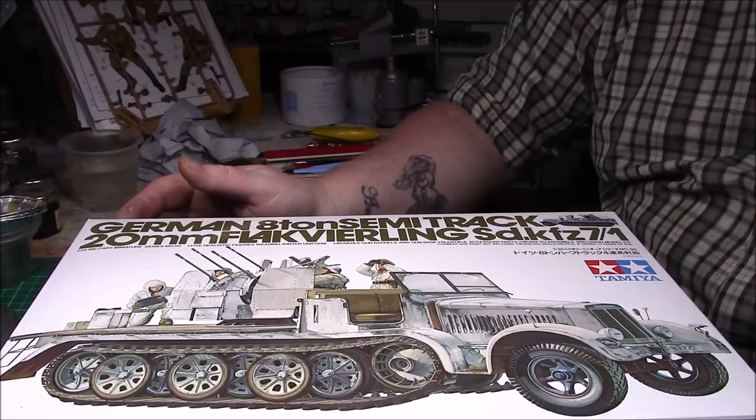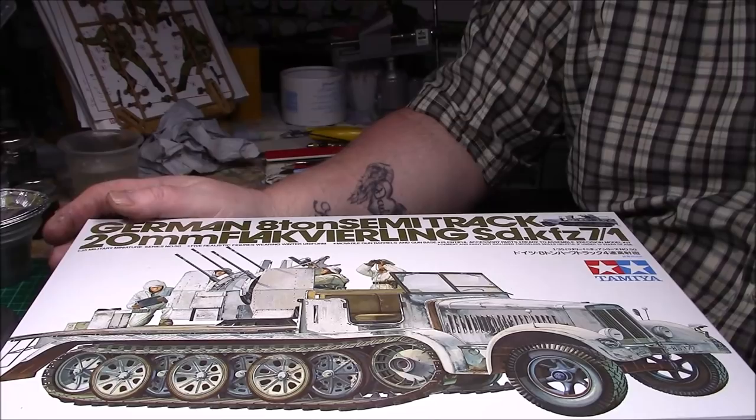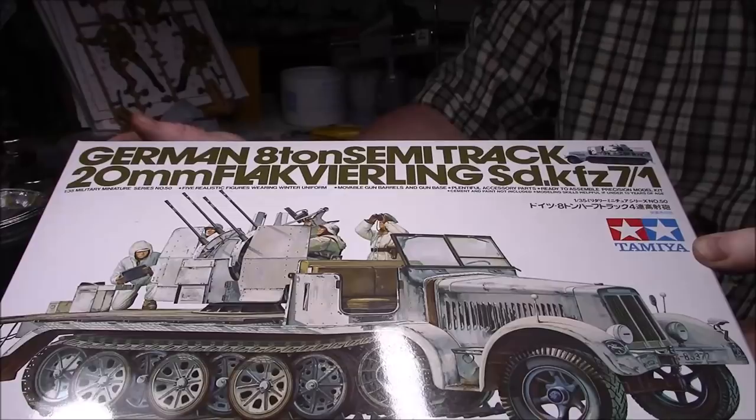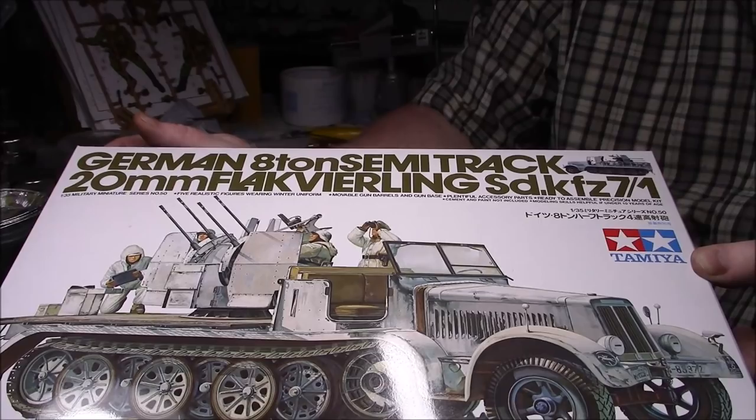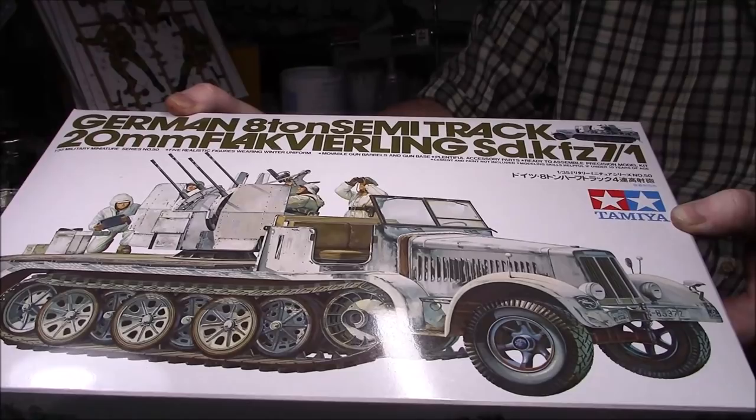Oh again ladies and gentlemen, it's Greg here with the unboxing of a kit that I wouldn't normally buy. I just thought it looked quite nice and the price was 20 quid for it, so I thought why not. I'm doing something slightly different and it's the German 8-ton semi-track 20mm flak veiling SDKFZ 71. It's an old kit but it's quite a nice looking beastie.